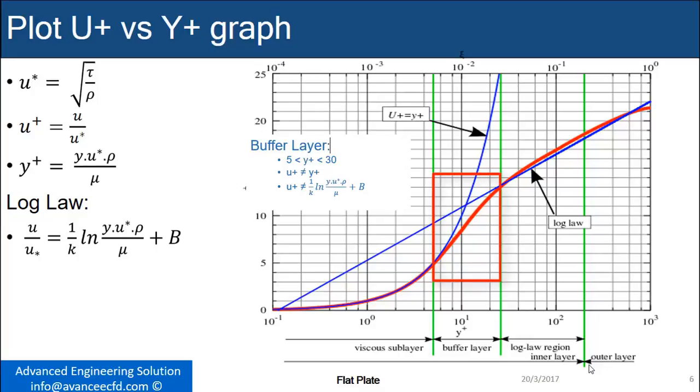The buffer layer is where flow neither behaves as laminar nor turbulent. This layer is observed for Y+ values from 5 to 30.